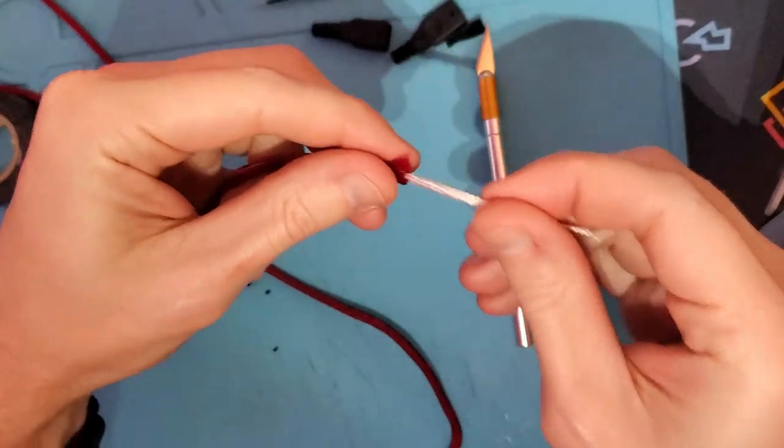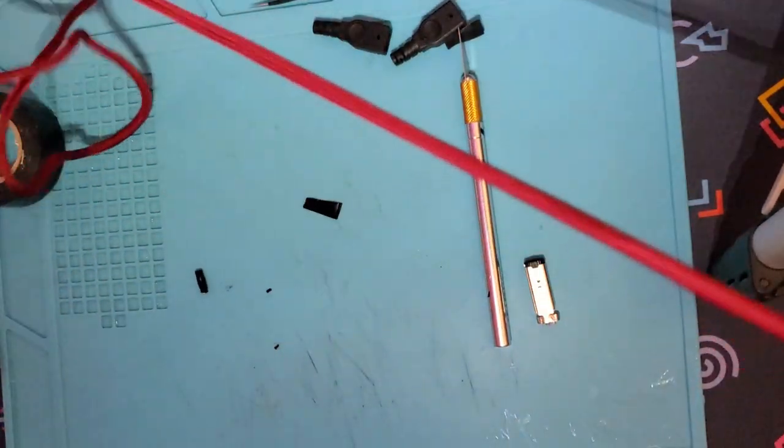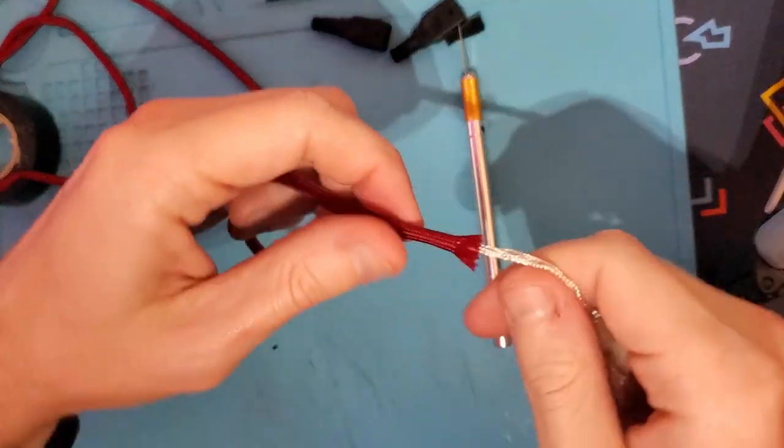Then you want to pull out the inner strands of the paracord so we can actually put the new cable in.